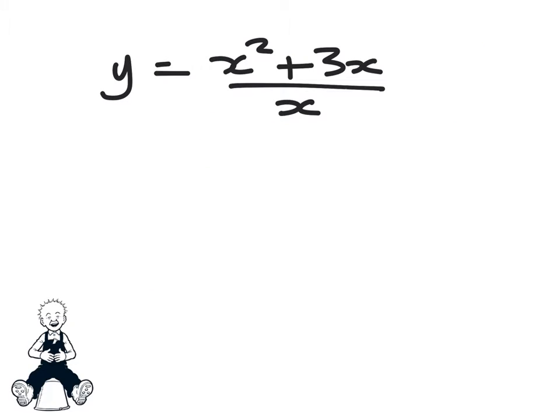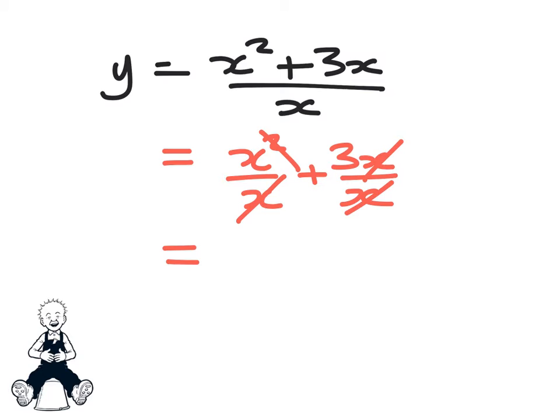And then question C. We've got a fraction this time. Best way to deal with the fraction is to split it up into two separate fractions. So we'll split this up as x squared over x plus 3x over x. Why are we doing that? Because we can get some canceling taking place. That will give you a simpler expression which you can then differentiate.